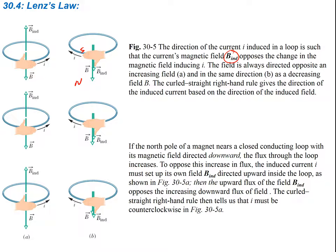If the north pole of a magnet nears a closed conducting loop with its magnetic field directed downward, the flux through the loop increases. To oppose this increase in flux, the induced current I must set up its own B_induced field directed upward inside the loop, as shown in figure A. The upward flux of B_induced opposes the increasing downward flux. The curled right-hand rule tells us that I must be counterclockwise — if we point our thumb upward, we can see that the current must be going around that way. The opposite is true for the other case.